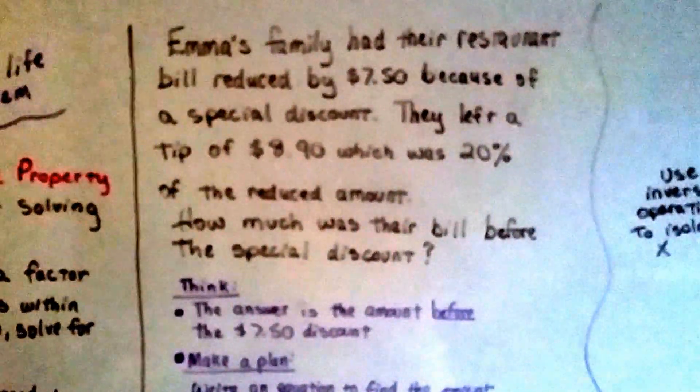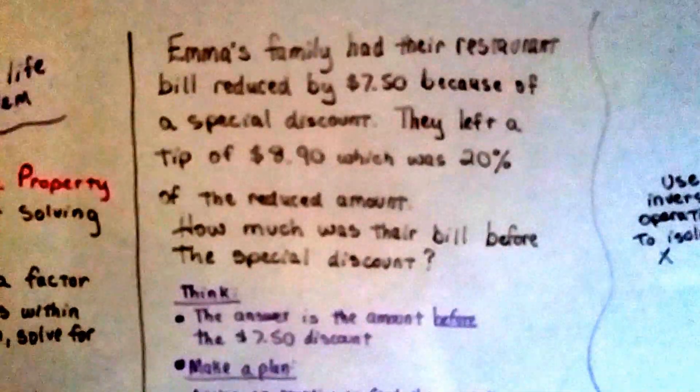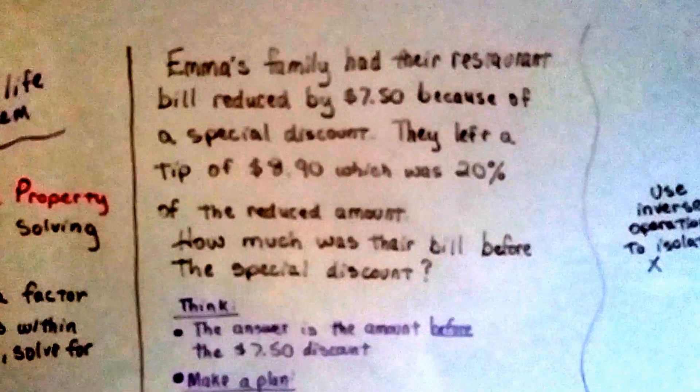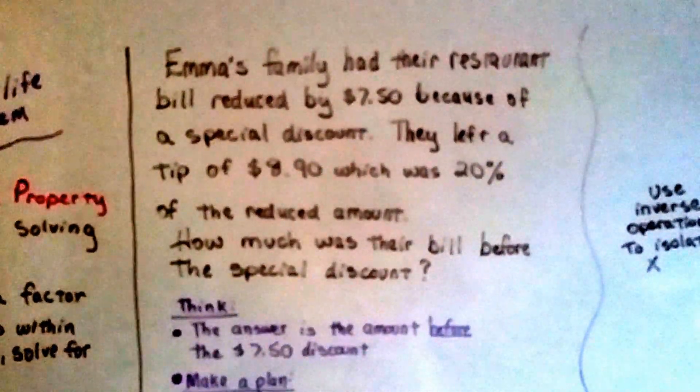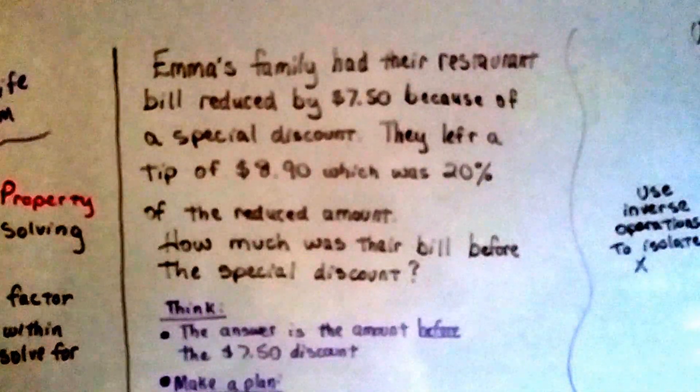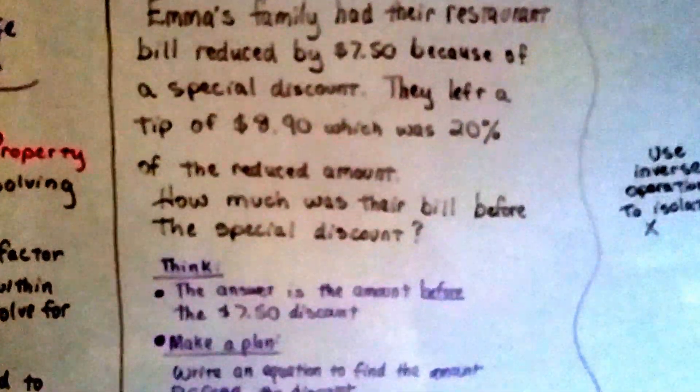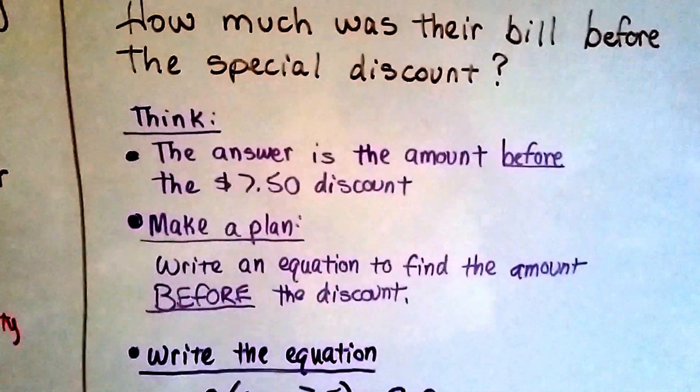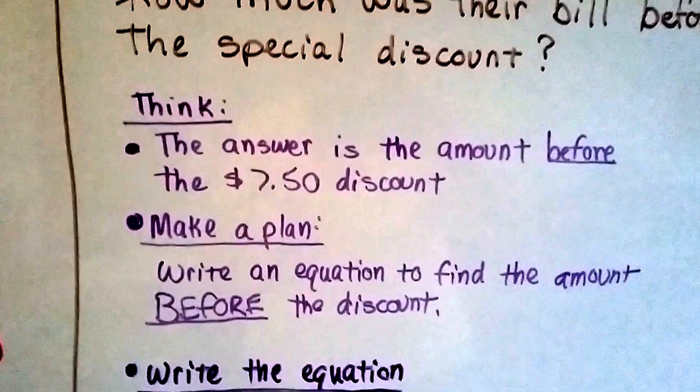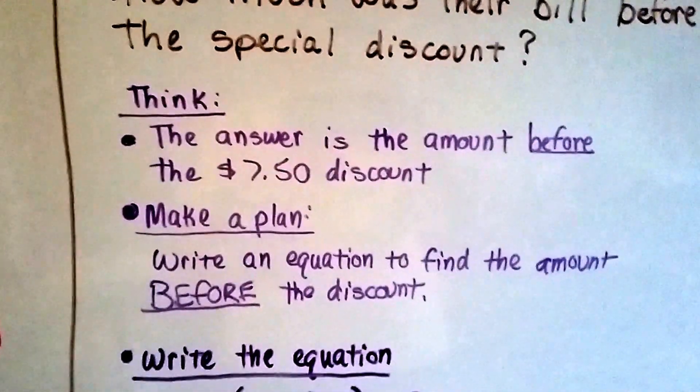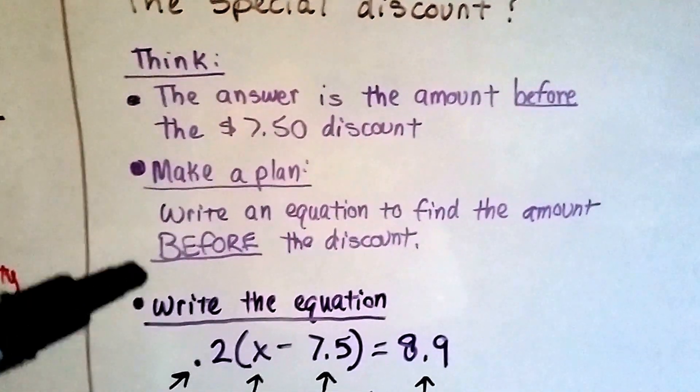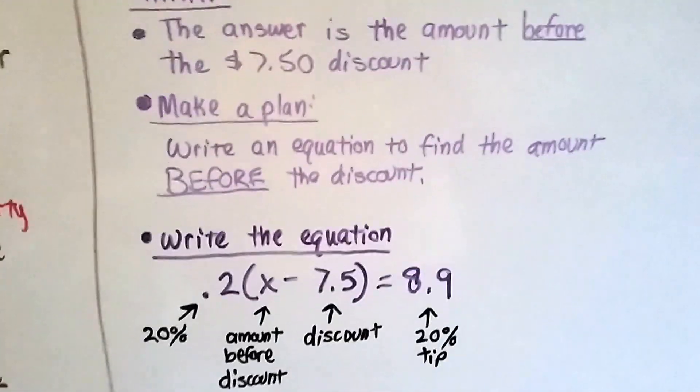So how much was their bill before the special discount? They had a restaurant bill. They had a coupon or something that $7.50 was taken off and they left a tip of $8.90, which was 20% of the reduced amount. We need to find out how much the bill was. So the answer is the amount before the $7.50 discount. If we can find that amount, we'll have the answer. So we're going to make a plan. We're going to write an equation to find that amount before the discount.